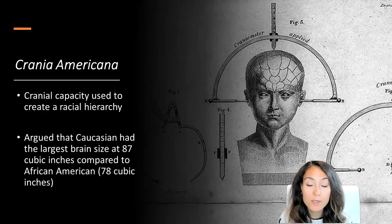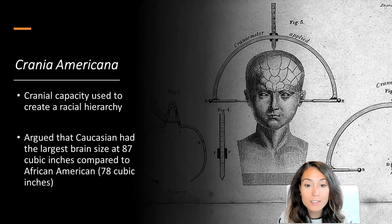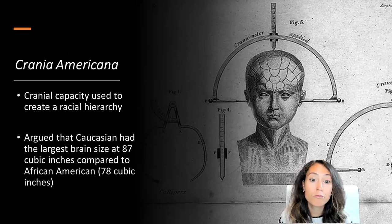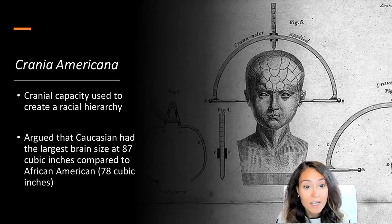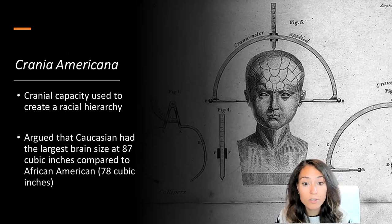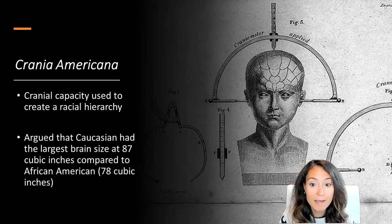Morton was really responsible for establishing the science of craniometry, which basically refers to the analysis of skull size and shape. He published his research in a book called Crania Americana in 1839. How Morton measured cranial capacity was to fill up each individual skull with BB-sized lead shot, pour out the shot, and measure the metric volume of that lead shot.